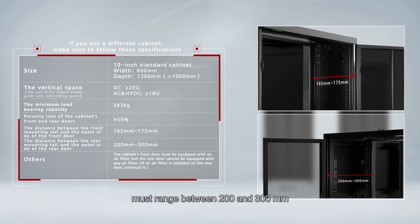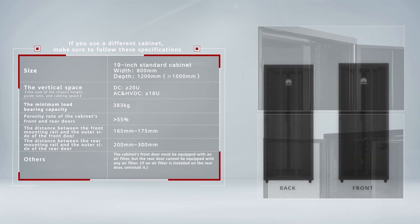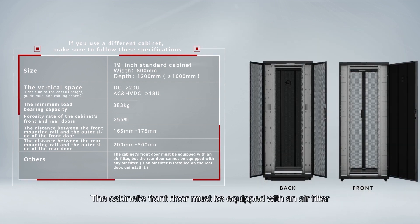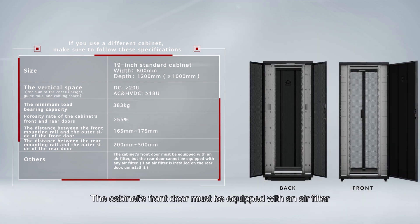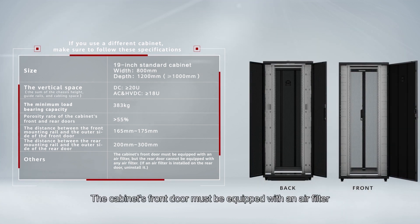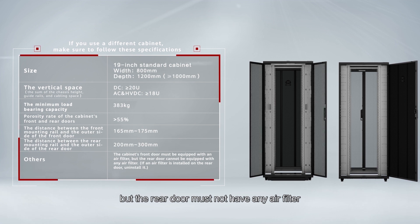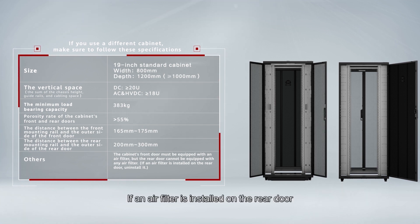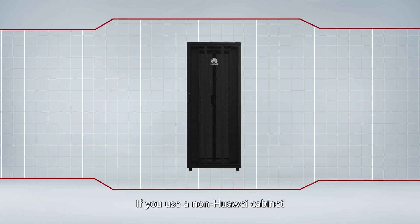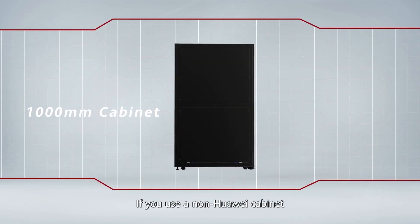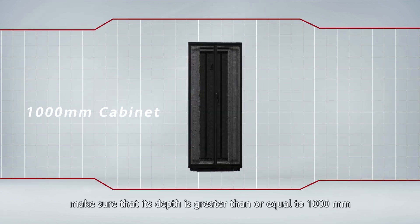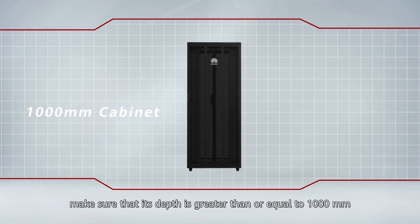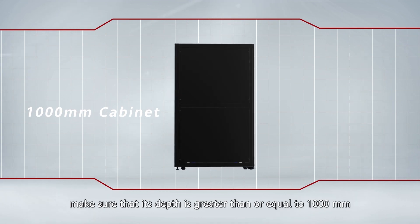The cabinet's front door must be equipped with an air filter, but the rear door cannot have any air filter. If an air filter is installed on the rear door, uninstall it. If you use a non-Huawei cabinet, make sure its depth is greater than or equal to 1000 millimeters.